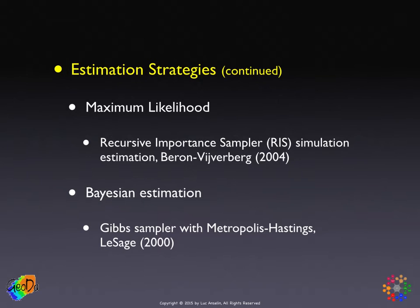Bayesian estimation is also based on a simulation estimator — a combination of a Gibbs sampler with Metropolis-Hastings — and that was outlined in the work by Jim LeSage. In the Bayesian lectures, I spent quite a bit of time explaining the difference between LeSage's approach, which uses the simultaneous autoregressive model, and the approach taken in most mainstream spatial statistical Bayesian literature, which uses a conditional autoregressive model. For the purposes of this discussion, I'll just give a sense of what's involved and how it's set up technically.